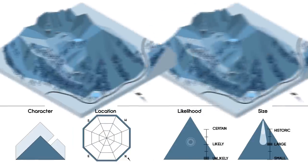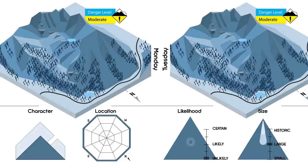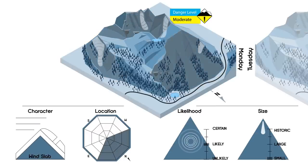Another way to look at it is that your terrain management decisions may vary between days with the same danger level. Here you are on a day with moderate danger with small, easy-to-trigger wind slabs on north-facing slopes.